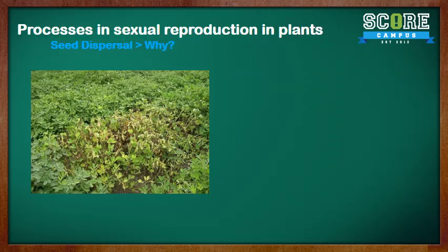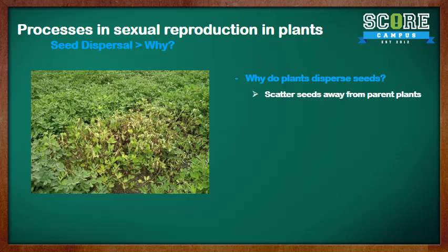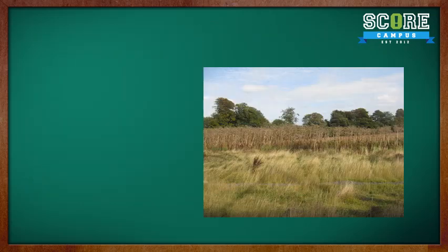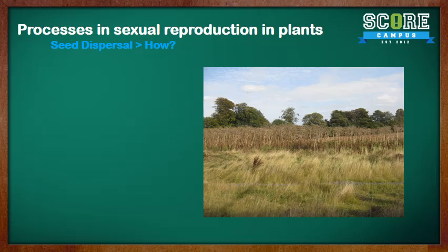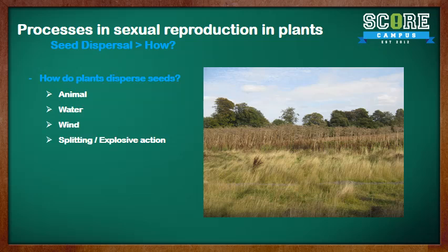Moving on to seed dispersal. Why do plants need to disperse their seeds? Dispersal of fruits and seeds helps to scatter them away from the parent plant, reducing competition between the parent and young plant, and preventing overcrowding. There are four main methods of dispersal: by animals, by water, by wind, and by splitting or explosive action.